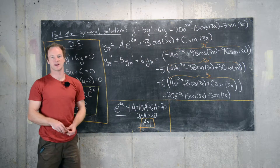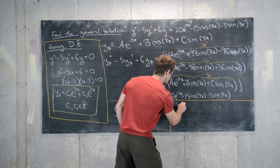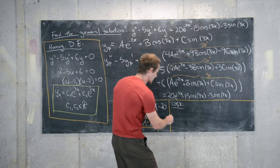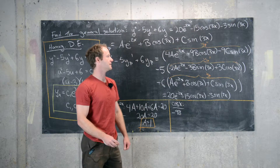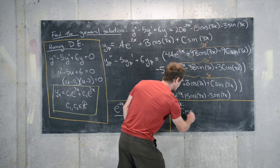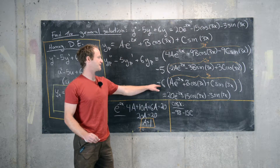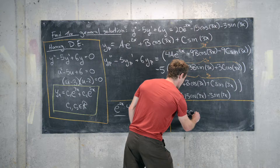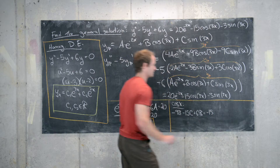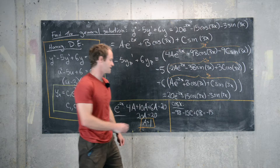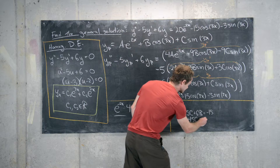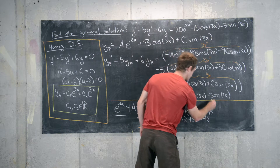Now let's move on to cosine 3x. On the left-hand side we have minus 9b, then minus 5 times 3c giving minus 15c, then 6 times b giving plus 6b — and this equals negative 15. Simplifying gives minus 3b minus 15c equals minus 15.